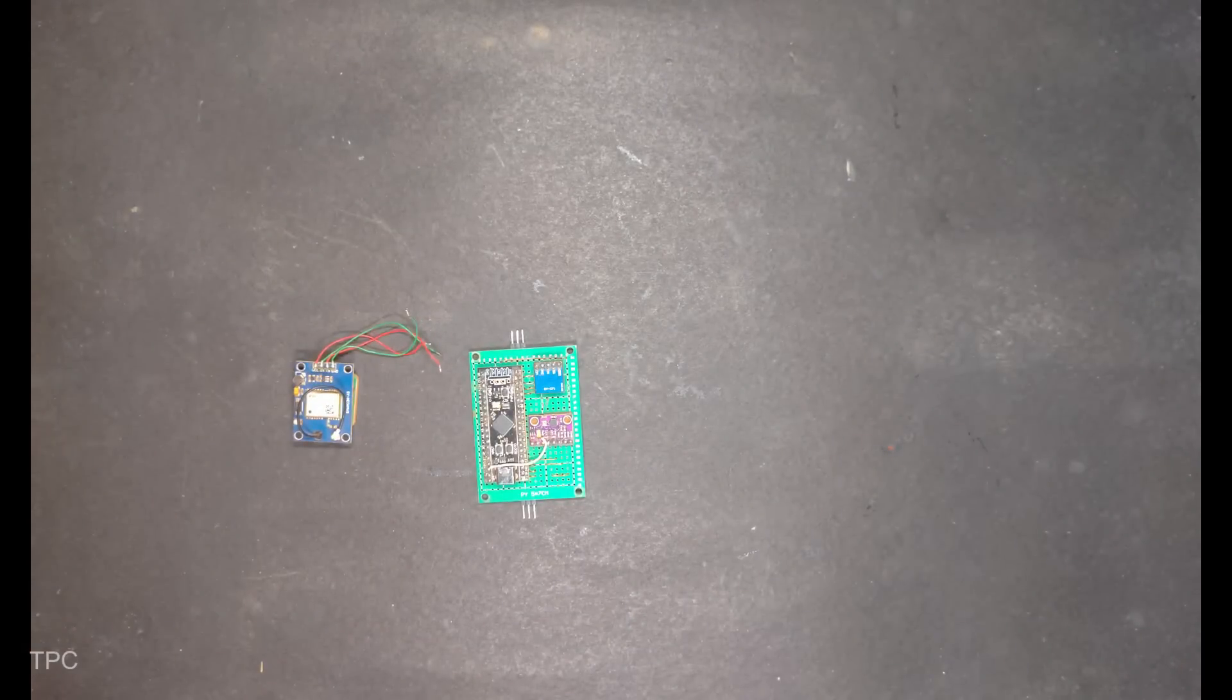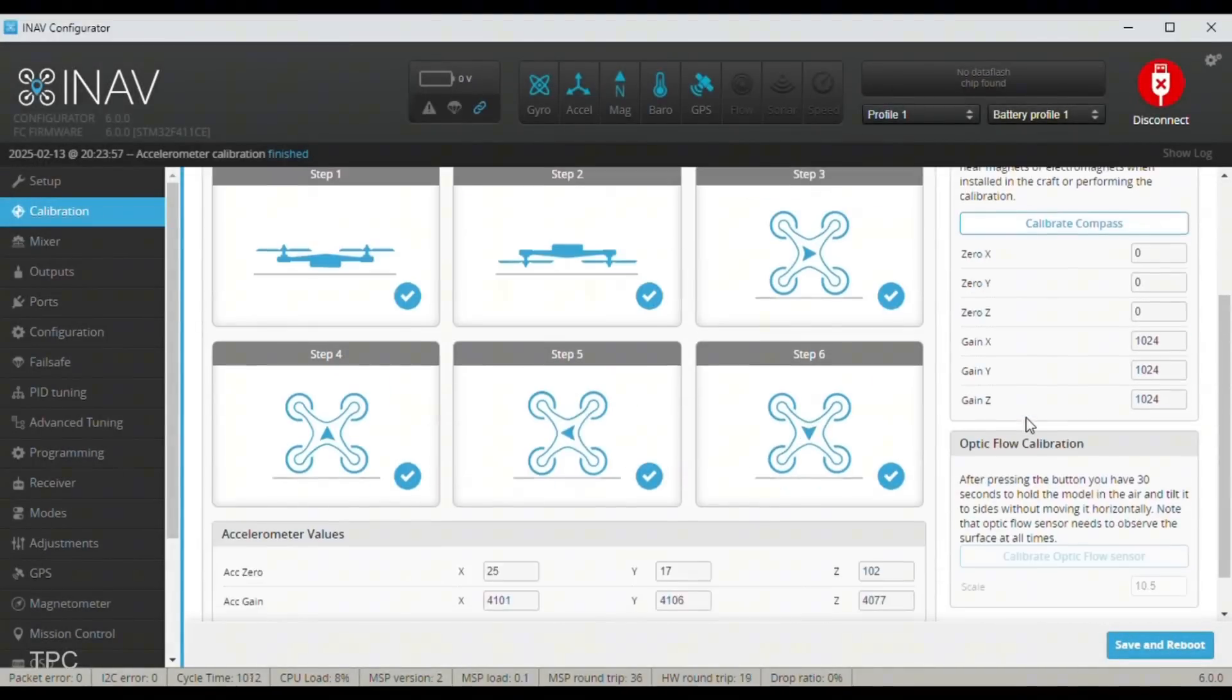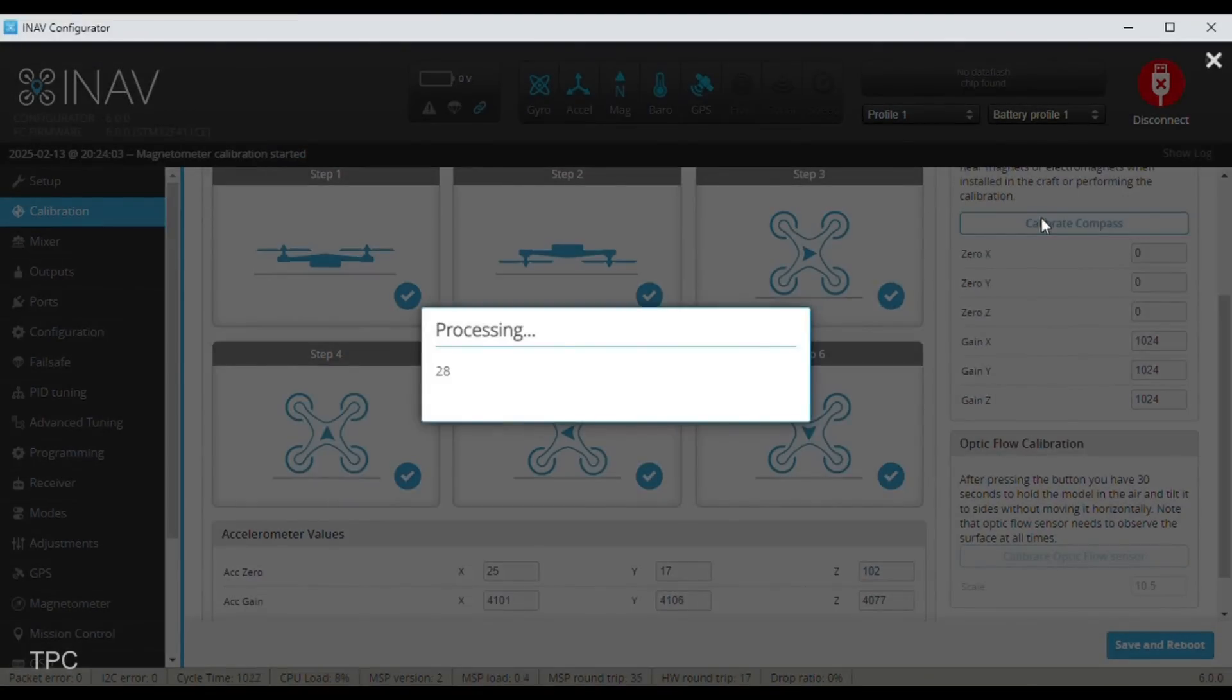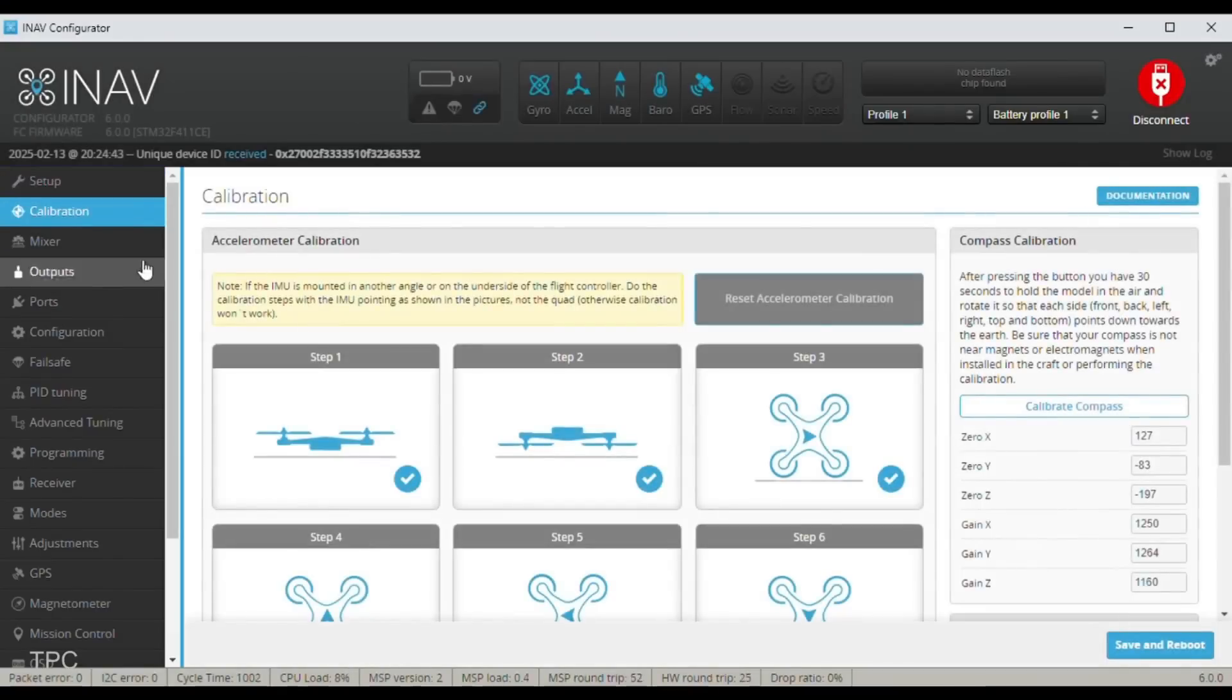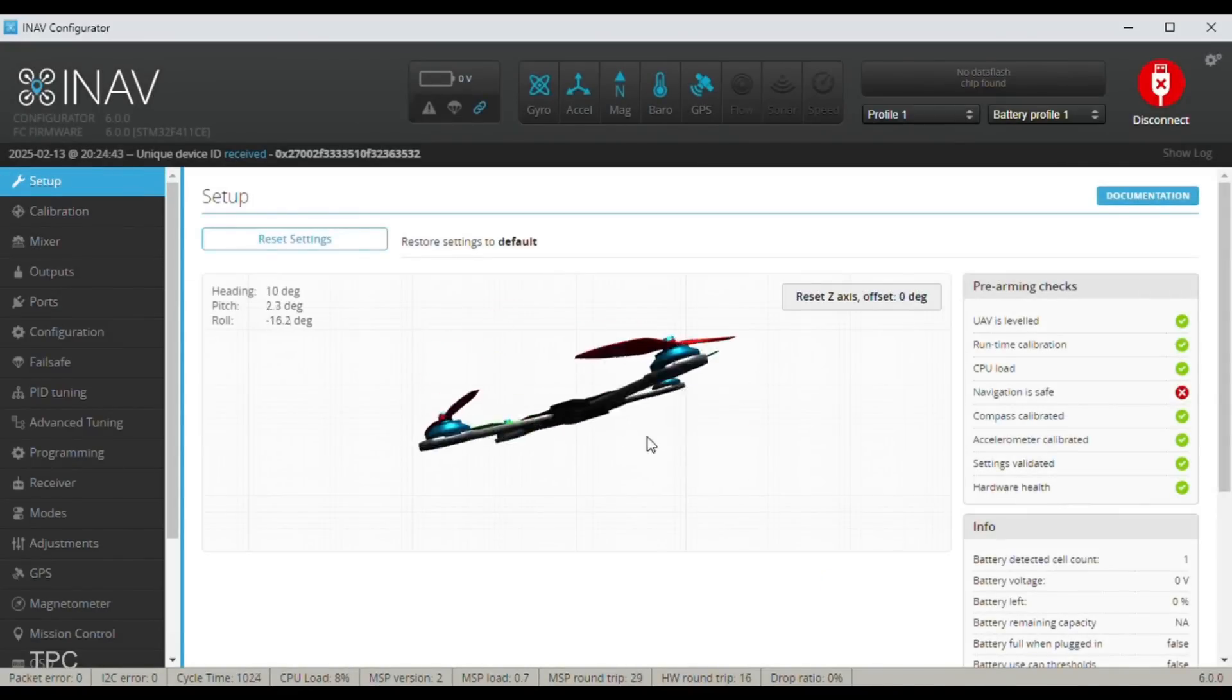But hardware alone wasn't enough. The key to achieving smooth, stable flight lay in the PID tuning process, an intensive effort that turned raw data into precise control.